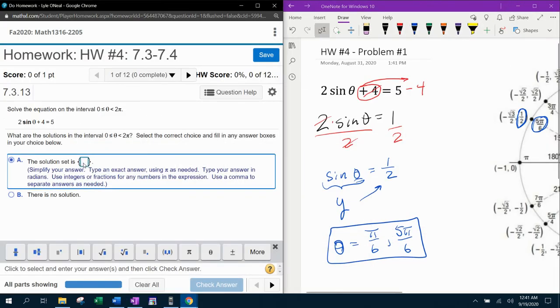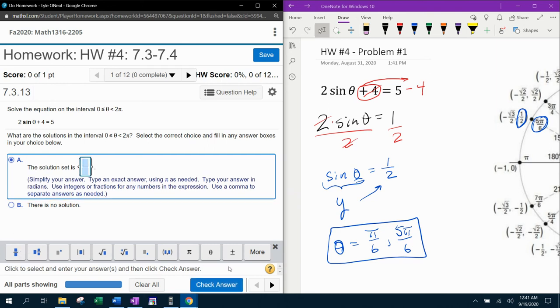And now to check with MyLabMath. The solution set is pi over six. Don't forget to separate your answers with a comma. And five pi over six.